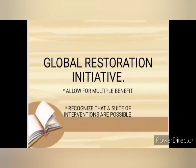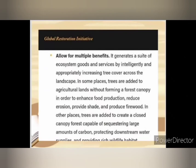I am Jolie Vicato, and my assigned topic is about the Global Restoration Initiative. The next principle is Allow for Multiple Benefits. FLR generates a suite of ecosystem goods and services by intelligently and appropriately increasing tree cover across the landscape. In some places, trees are added to agricultural lands without forming a forest canopy, in order to enhance food production, reduce erosion, provide shade, and reduce firewood demand. In other places, trees are added to create a closed-canopy forest capable of sequestering large amounts of carbon, protecting downstream water supplies, and providing rich wildlife habitat.